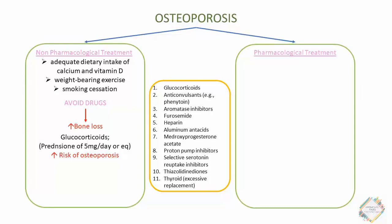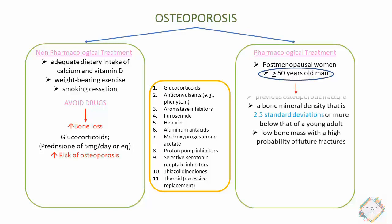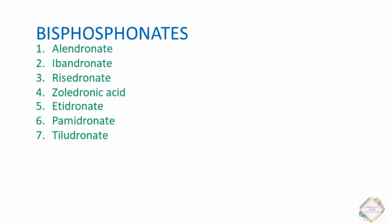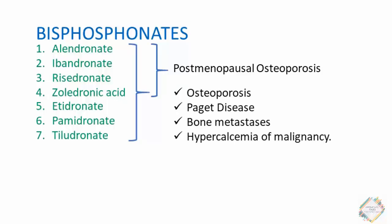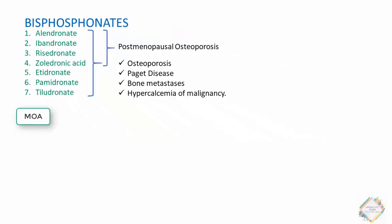Pharmacological therapy is warranted in post-menopausal women and men aged 50 or over who have a previous osteoporotic fracture, a bone mineral density 2.5 standard deviations or more below that of a young adult, or low bone mass with a high probability of future fractures. The first drug class is bisphosphonates, which include alendronate, ibandronate, risedronate, and zoledronic acid, used for prevention and treatment of post-menopausal osteoporosis. Etidronate, pamidronate, and tiludronate also play important roles in treating osteoporosis, Paget's disease, bone metastasis, and hypercalcemia of malignancy.